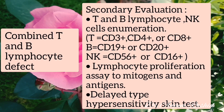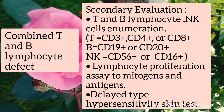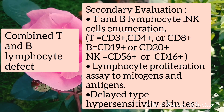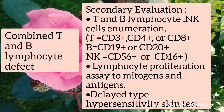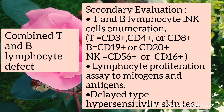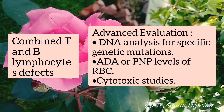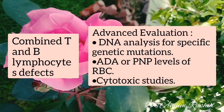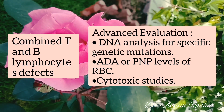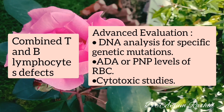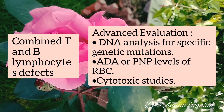Secondary evaluation for combined T and B lymphocyte defects includes T and B lymphocyte and natural killer cell enumeration detecting specific CD markers, lymphocyte proliferation assay to mitogens and antigens, and delayed-type hypersensitivity skin testing. Advanced evaluation includes DNA analysis for specific genetic mutations, red cell adenosine deaminase and purine nucleoside phosphorylase levels, and cytotoxic studies.